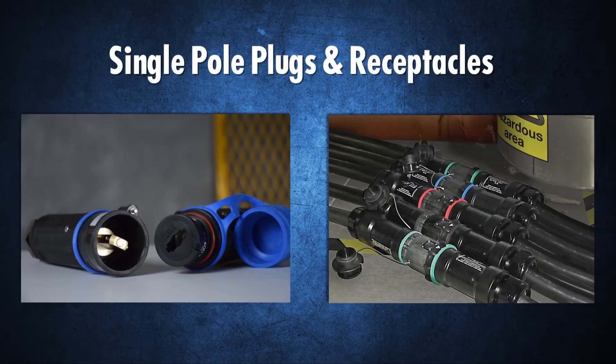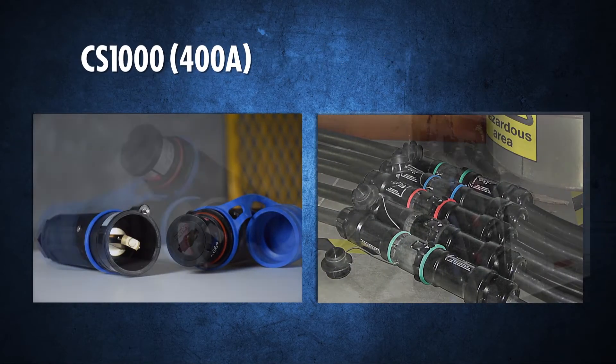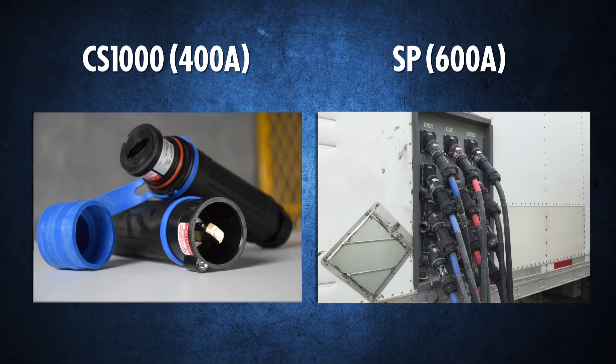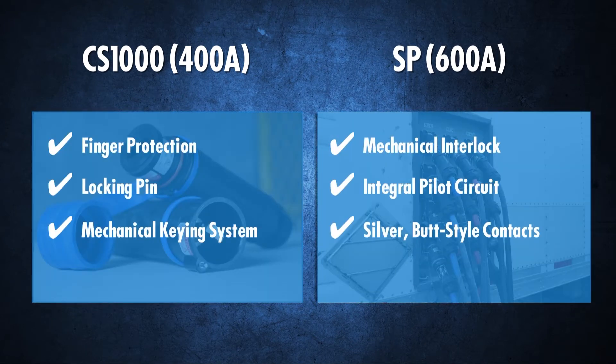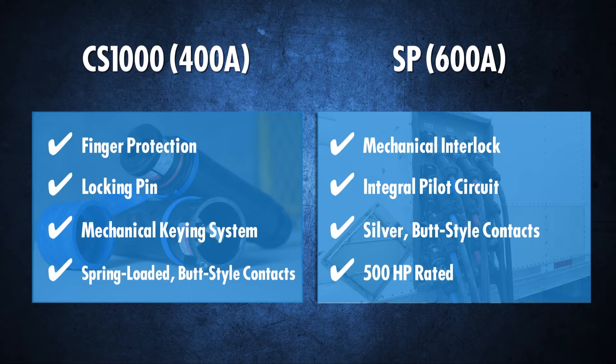For single pole applications, Meltrix CS1000 and SP series product lines offer exclusive safety and performance features at high amperages. The SP series is rated up to 500 horsepower.